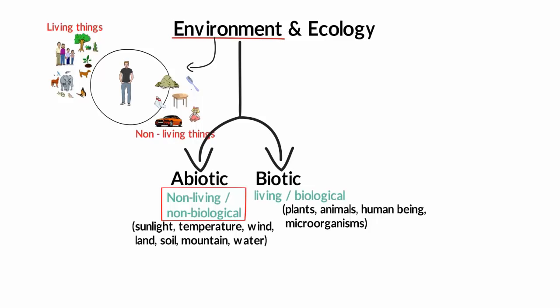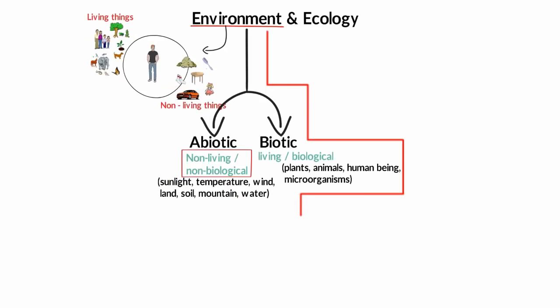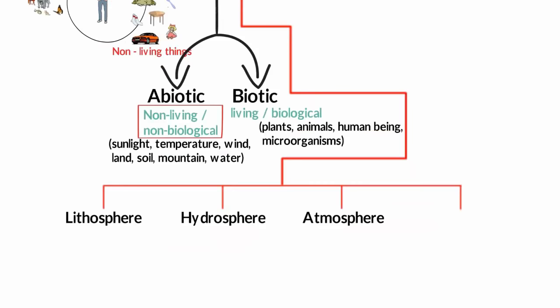Now that you know the biotic and abiotic components of the environment, another thing that you have to understand is that our environment has three domains. Actually it has four, I'll talk about the fourth one in a moment, but as of now we'll just go with three domains. And these three domains are lithosphere, hydrosphere, and atmosphere. The lithosphere refers to rocks and minerals, which is basically the land on which we stand. It comprises of the crust and the upper mantle.